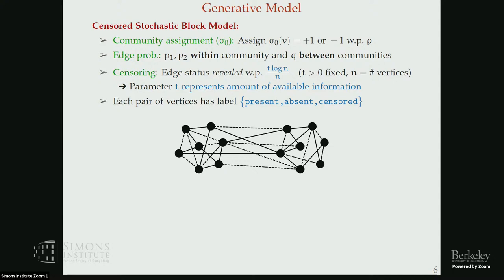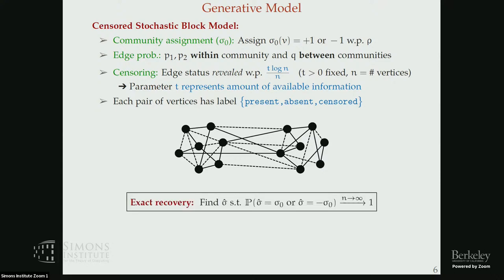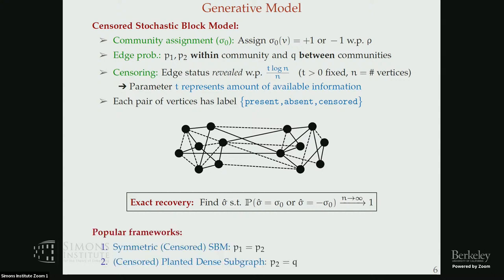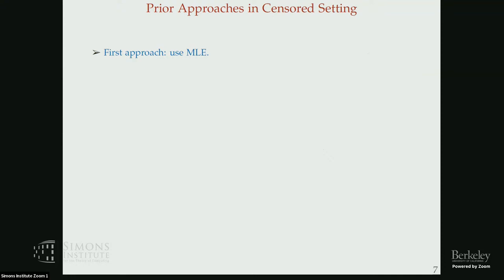We observe an unlabeled graph and between each pair of vertices we know whether the connection is censored, present, or absent. The goal is to find the communities exactly — an estimator exactly equal to the true community assignment with high probability, up to a global flip. Two popular cases are the symmetric case where edge densities are equal in both communities, and the planted dense subgraph problem where a smaller dense subgraph is hidden inside a larger graph (p2 = q).